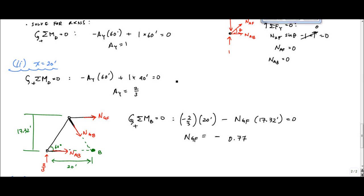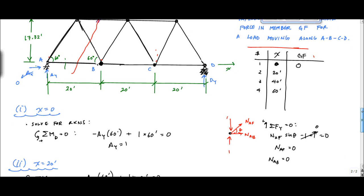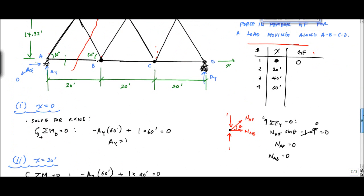Alright, welcome back. We're back with this example problem on influence lines for trusses. We're filling out this chart. We just calculated so far the internal force at GF when the unit load is at point A, then we went to point B and we had the unit force at point B and we removed the unit force at A to analyze this.